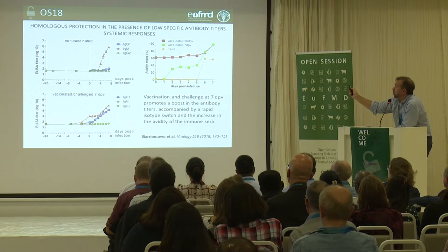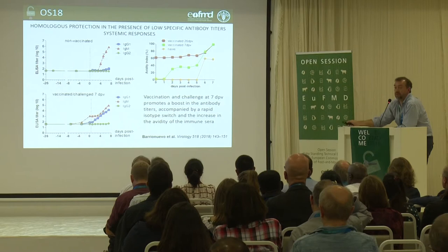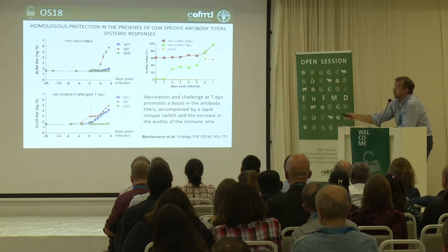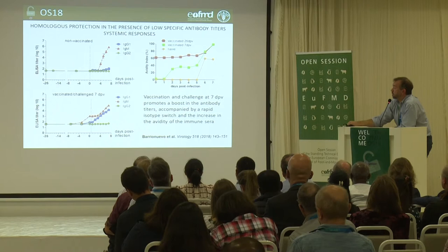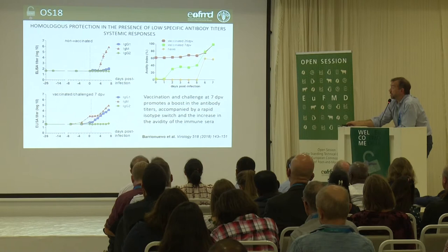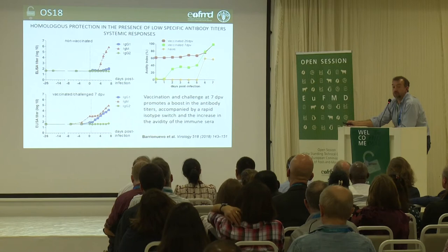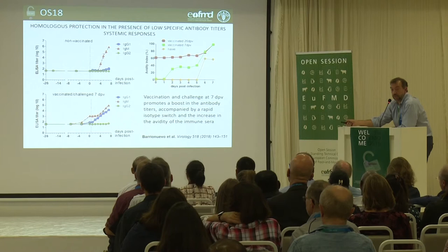This fast IgG1 response was accompanied by avidity data shown on the upper right of the slide. The vaccinated animal maintained similar avidity levels before the challenge and then increased. Compared to the naive, the vaccinated animal developed a really fast increase in avidity in its serum — that could be the reason this animal is protected.